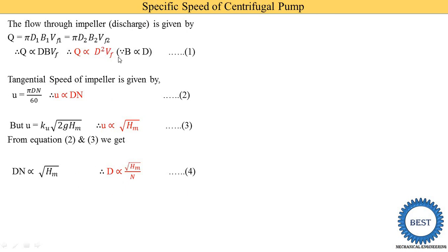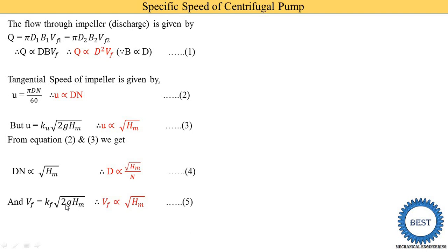Next we need the velocity of flow Vf. We know that Vf = Kf√(2g·Hm). Since Kf, 2, and g are constants, they are removed, giving Vf ∝ √Hm. This is equation 5.